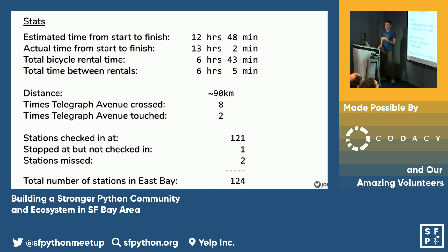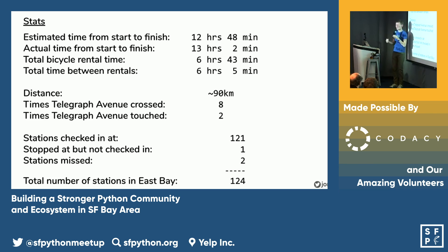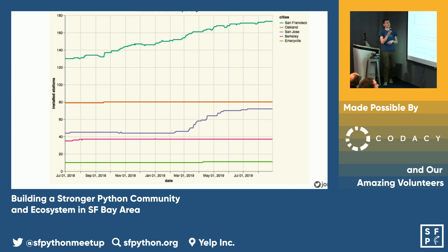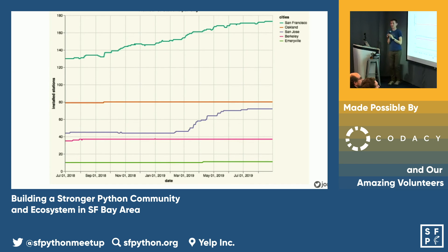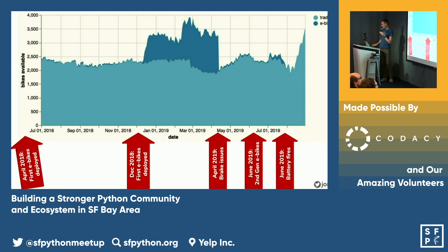A funny thing happened: I had set up a scraper to scrape that JSON file every five minutes, and I forgot to stop it. So since mid-2018 I've been scraping the system health of Bay Wheels every five minutes — I just recently found that running on my AWS instance. I can tell you how many stations they added in the past year and a half: San Francisco saw big growth, San Jose saw big growth, but not much going on in the East Bay. I could basically do that same trip again today with only one additional station.